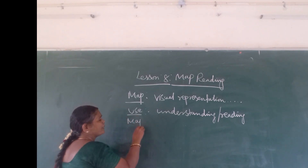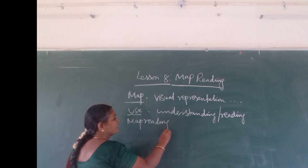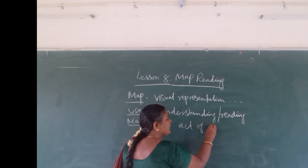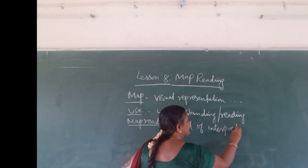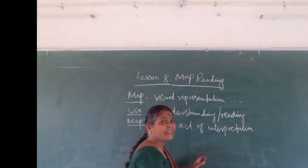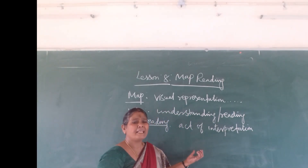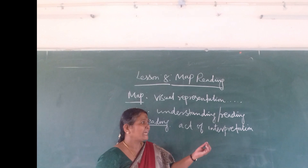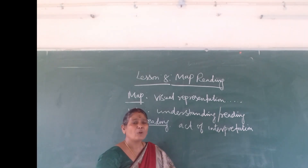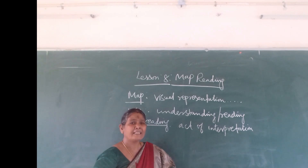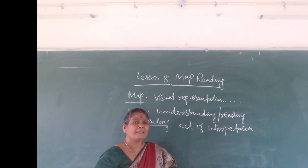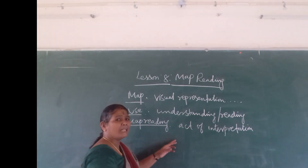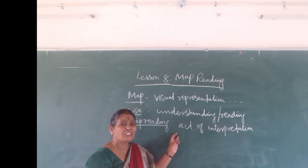Now we see map reading. What is called map reading? Map reading is the act of interpretation and reading of information presented on the actual ground surface. Interpretation means explaining. So by processing the symbolized information which is present on the map, one is able to develop a mental map of the actual world.